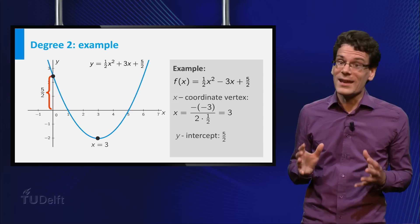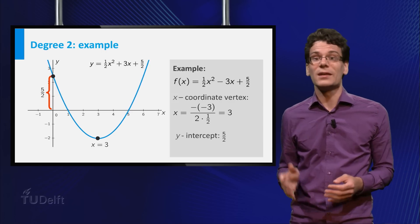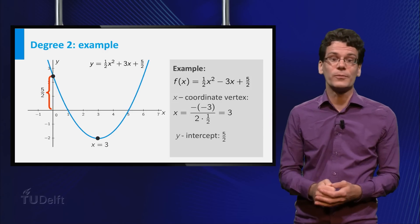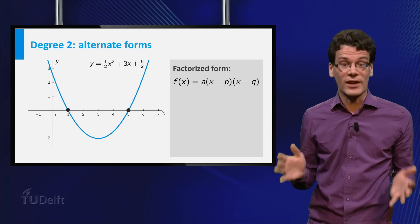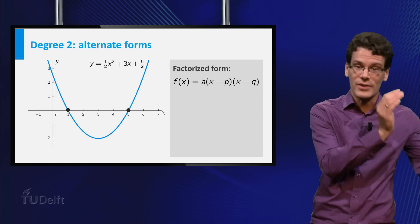As we mentioned, you can write any polynomial in standard form. But when it comes to quadratic polynomials, there are at least two other forms that are also very useful. The first is the factorized form, a times (x minus p) times (x minus q), where a, p and q are numbers.